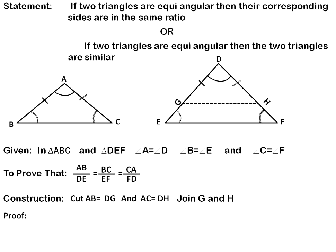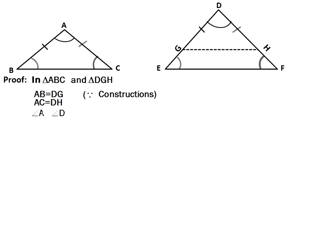We now have a new smaller triangle ABC and triangle DGH. We need to prove that triangle ABC and triangle DGH are congruent. In triangles ABC and DGH: AB equals DG, and AC equals DH — both by construction — and angle A equals angle D, which is already given. Therefore, by the SAS (Side-Angle-Side) postulate, triangle ABC is congruent to triangle DGH.